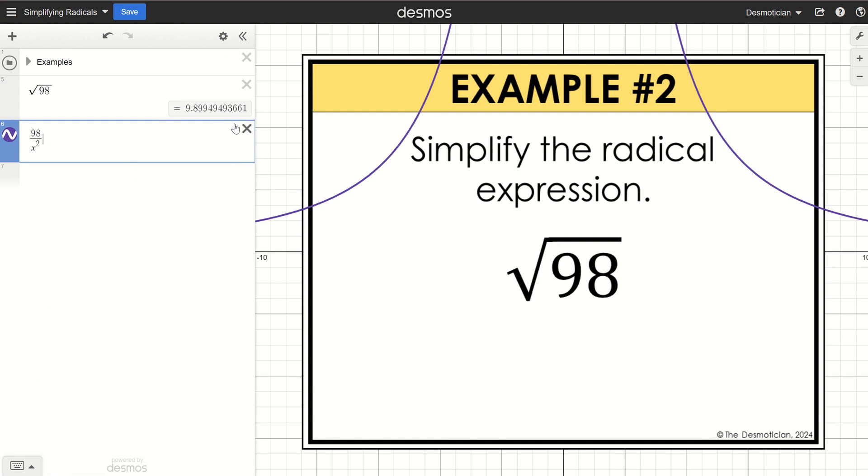And just for good measure, I'm going to type it in right here, 7 times the square root of 2. And you'll notice that these decimal approximations are equivalent.